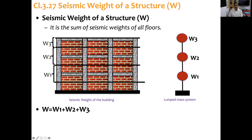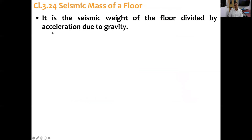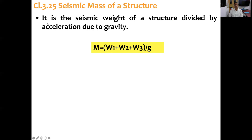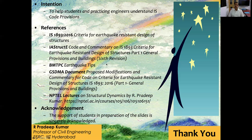Seismic mass of a floor is simply the seismic weight of that floor divided by the acceleration due to gravity g. So Mass 1 = Weight 1 / g. Similarly, seismic mass of the structure is the total seismic weight (W1 + W2 + W3) divided by g. Here too, the seismic mass of the structure is less than the total mass of the structure, and that gap is accounted for in the missing mass correction. The intention of this short lecture series is to help students and practicing engineers understand IS code provisions in a better manner.